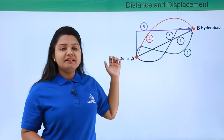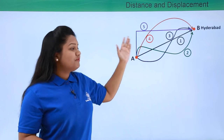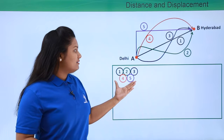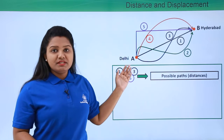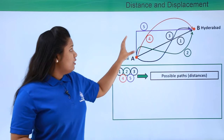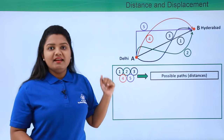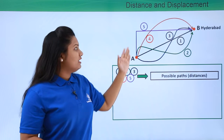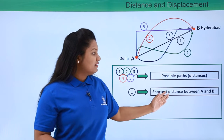Having a closer look at all these paths, we can say that the path length of all of them are different from each other. Every time I choose one path I'll be traveling a different distance. All these five paths are the possible paths I can take, and each path is associated with a different path length. Now, what do you think is the shortest path? Obviously it will be path number one, which straightaway connects point A to point B.